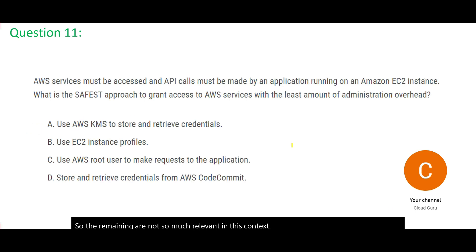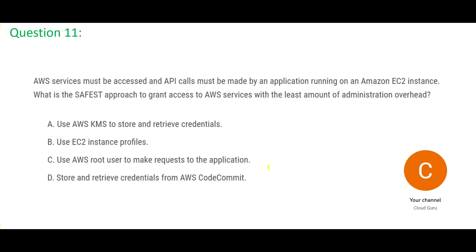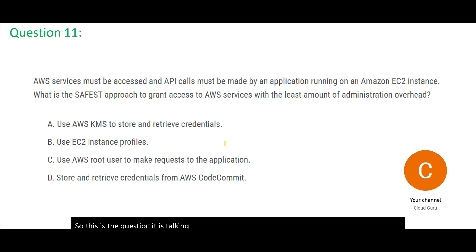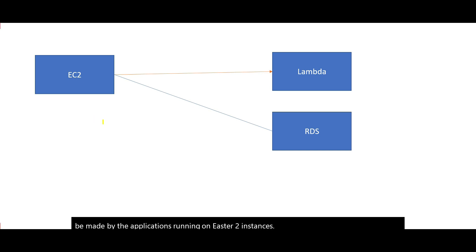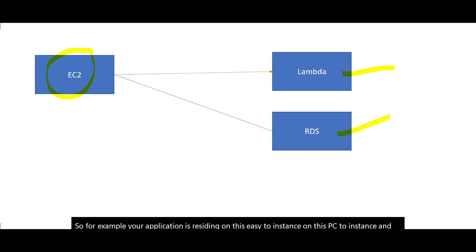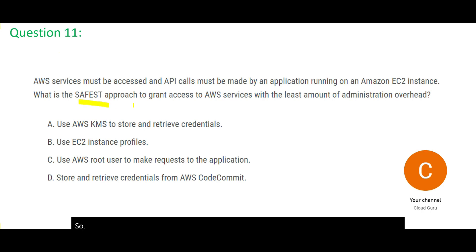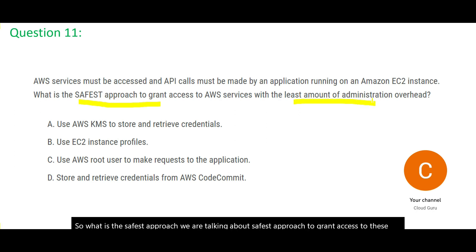Let's look at the next question. It is talking about AWS services that must be accessed and API calls that must be made by an application running on EC2 instances. Your application resides on an EC2 instance and you want to make API calls to different AWS services — Lambda, RDS, or others. The question asks for the safest approach to grant access with the least amount of administration overhead.